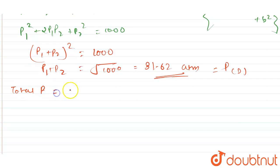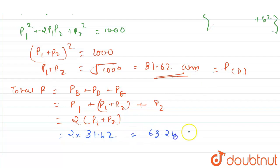Moving forward, the total pressure it is asked. Total pressure in the system is going to be equal to P_B plus P_D plus P_E. P_B we have P1, P_D we have P1 plus P2, and P_E we have P2. So this is going to be equal to 2(P1 plus P2). P1 plus P2 value we have as 31.62, so 2 into 31.62 will give you the value as 63.24 atm. So this will be the answer for this question.